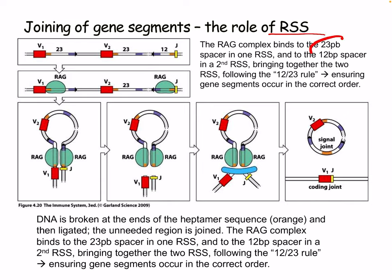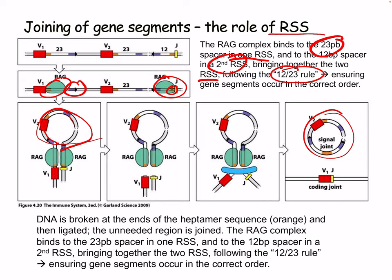The RAG complex binds to the 23 bp spacer in one RSS and to the 12 bp spacer in the second RSS, bringing together the two RSS following the 12-23 rule and ensuring gene segments occur in the correct order. DNA is broken at the ends of the heptamer sequences and then ligated, with the unneeded region joined and excised as a signal joint.